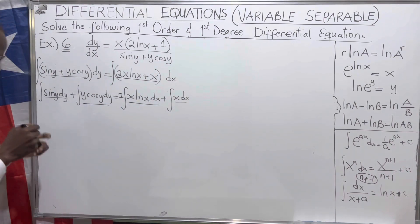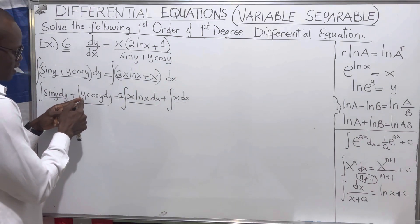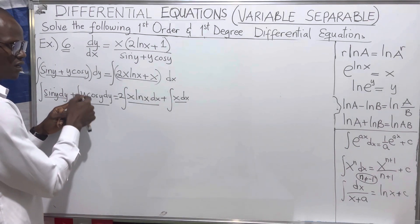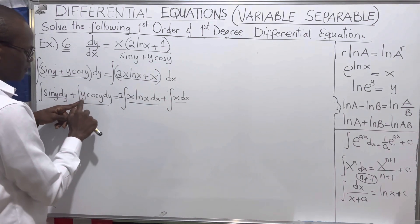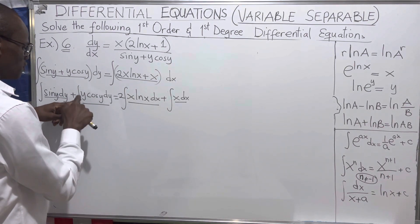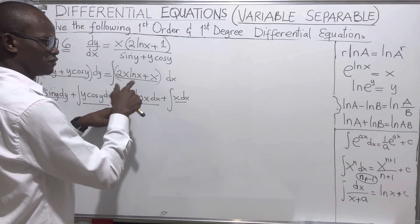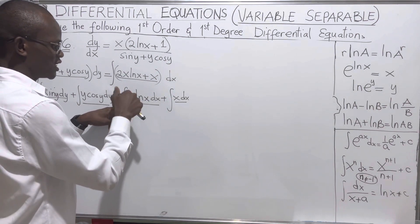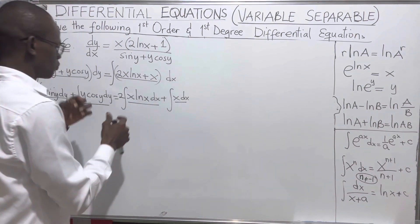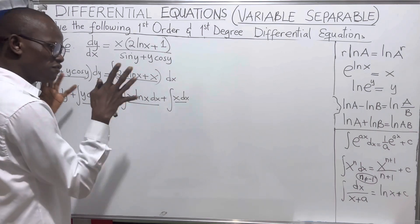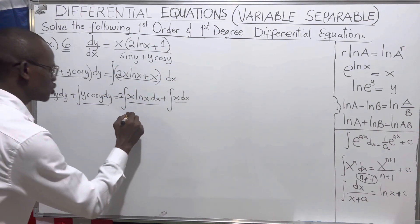We can easily integrate some of these, but the terms y·cos(y) and x·ln(x) require integration by parts. In the first case we have a variable and a trigonometric function, and in the second case we have a variable and a logarithmic function. Because of these distinct function types, we must use integration by parts.